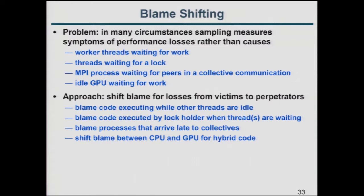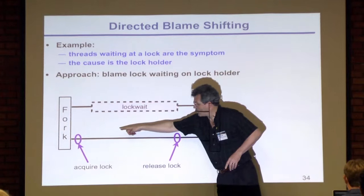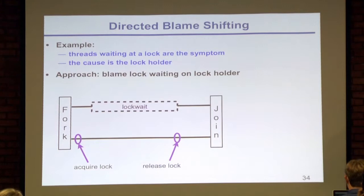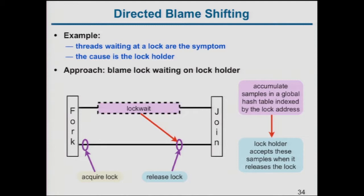The way we do this is a general technique called blame shifting. For locks: when one thread holds a lock and another is waiting, we accumulate samples in a global hash table indexed by the lock address. Upon the lock release, the holder checks the hash table, finds how much cost was attributed to that lock, and attributes it to the lock release — so you know at that point whether the lock holder delayed many or few processors.